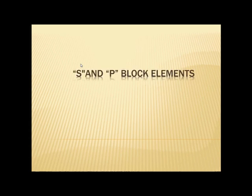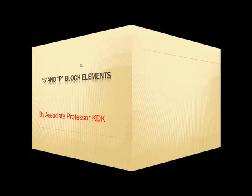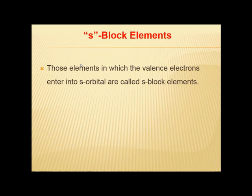Today we are going to start Chapter 13: S and P Block Elements of second year chemistry. First, we should know what s block elements are. Those elements in which the valence electrons enter into the s orbital are called s block elements. They include alkali metals, also called elements of Group 1A of the periodic table.